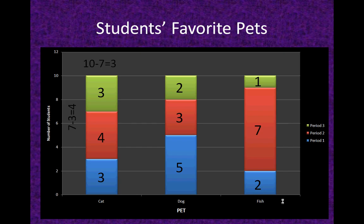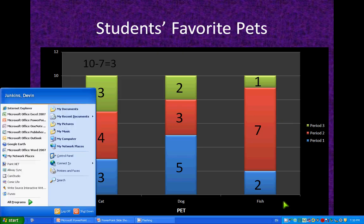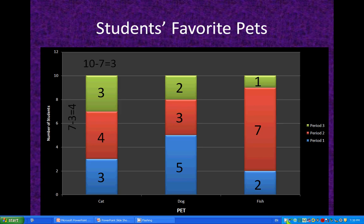And then you see one person likes fish in period three — that's a sensible group. Well, there you have it. You're finished. You know how to read stacked bar graphs. I hope you use your new knowledge well. Thanks for watching. Have a great day.